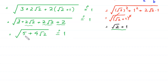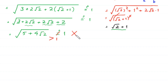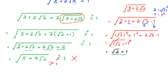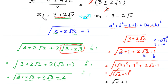We notice that the expression √(5 plus 4√2) is greater than 1, so it is not equal to 1. This condition is not satisfied, so the value x₁ equals 3 plus 2√2 is rejected — it is not a valid solution.